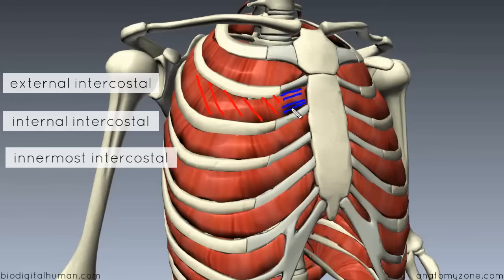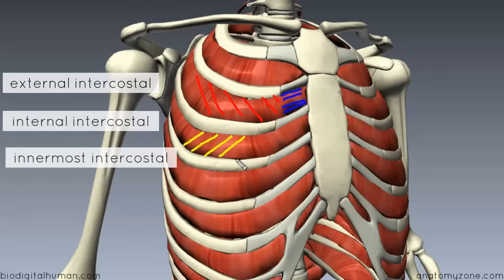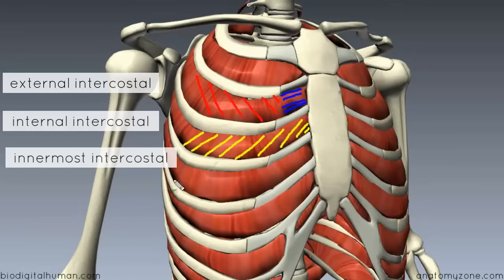Underneath the external intercostal is the internal intercostal muscle, whose fibres are oriented in the opposite direction — superiorly and medially. This muscle does not have an aponeurosis connecting it to the sternum. Deep to the internal intercostal, you find the innermost intercostal muscle, whose fibres are oriented in the same direction as the internal intercostal — superiorly and medially.